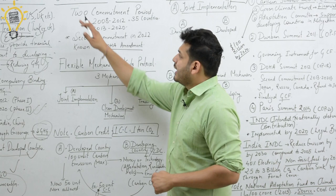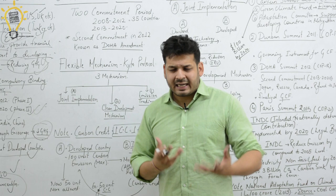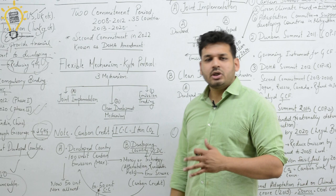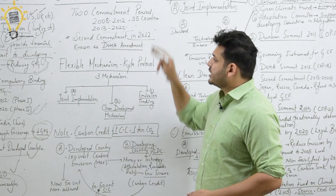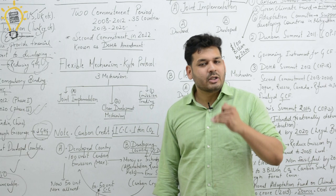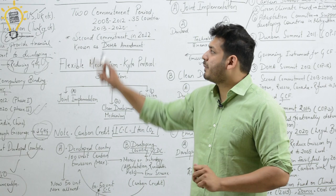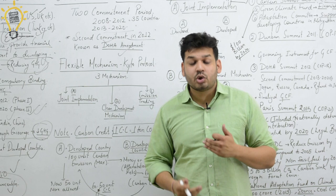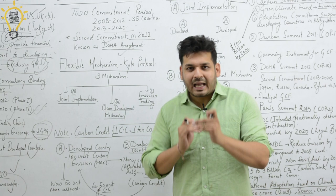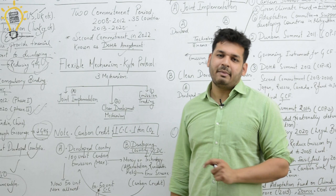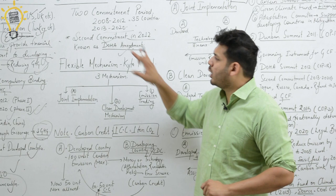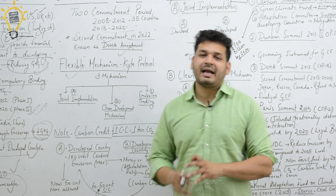The first commitment period was 2008–2012, with around 35 countries having targets. The second commitment period runs from 2013 to 2020. In the 2012 meeting — the third COP summit (Doha/COP18) — the Doha Amendment was made to extend commitments from 2013 to 2020. Now let's discuss the three flexible mechanisms of the Kyoto Protocol.